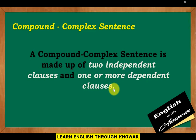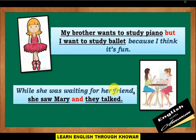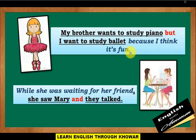Example sentence: 'My brother wants to study piano but I want to study ballet because I think it's fun.' This is a compound complex sentence. 'My brother wants to study piano' is the first independent clause. 'But' is the coordinating conjunction. 'I want to study ballet' is the second independent clause. 'Because I think it's fun' is the dependent clause.